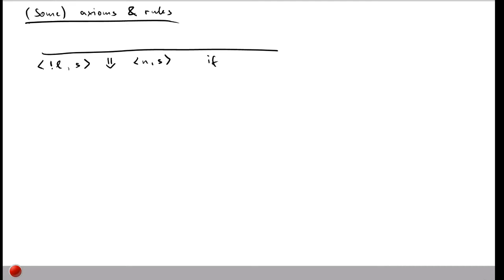This evaluates to n and s if the store maps l to n. This is again the axiom to read variables, and as you can tell by comparing it to the previous axiom we've seen in small step semantics, this is almost the same as before.